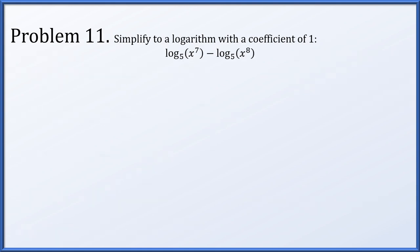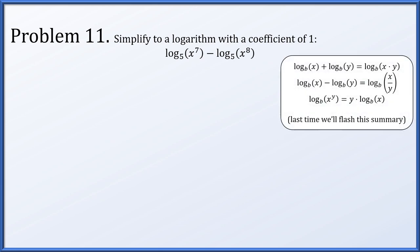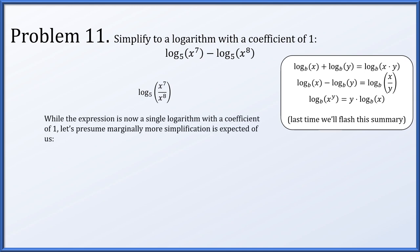Problem 11: simplify to a single logarithm with a coefficient of 1. We have log base 5 of x to the seventh minus log base 5 of x to the eighth. Since this is a difference of two logarithms, we write it as a quotient: log base 5 of x to the seventh over x to the eighth, which simplifies to log base 5 of 1 over x.